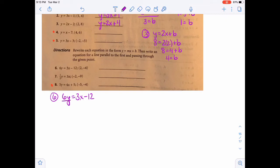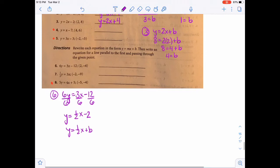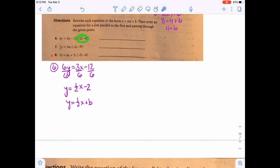So for number 6, you have to first divide everything by 6. And so that's going to give you y equals 1 half x minus 2. So then we'll start a new line with the same slope. So y equals 1 half x plus b. And then we'll use the point 2 negative 4. So that's going to be a negative 4 for the y, 1 half times 2, and then plus b.